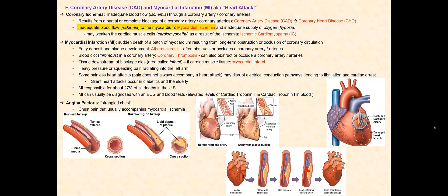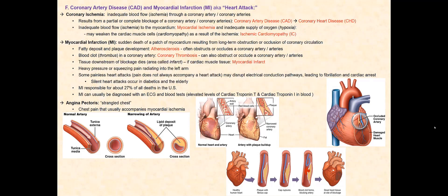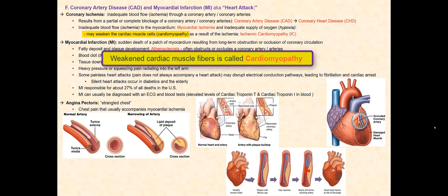Since the inadequate blood flow now affects the myocardium, the condition is called myocardial ischemia. The reduction of blood flow to the myocardium decreases the oxygen delivery to the cardiac muscle cells or cardiac muscle fibers. The reduced supply or inadequate delivery of oxygen to a tissue or organ is called hypoxia. This reduction of oxygen to the myocardium weakens the cardiac muscle cells. The weakening of the cardiac muscle fibers is called cardiomyopathy. If the cardiomyopathy is the result of myocardial ischemia, then this is called ischemic cardiomyopathy.